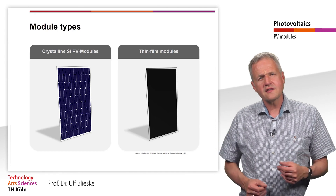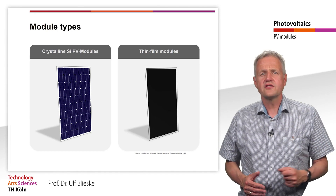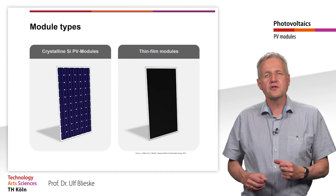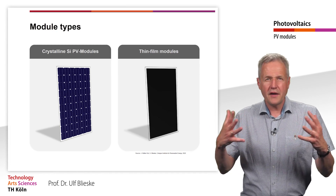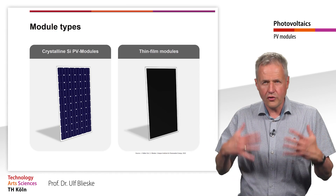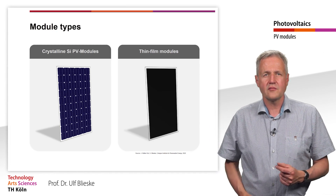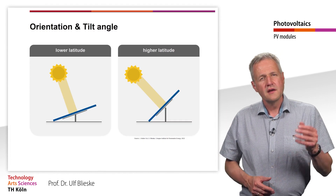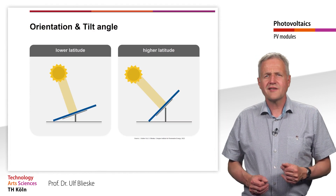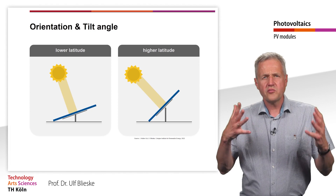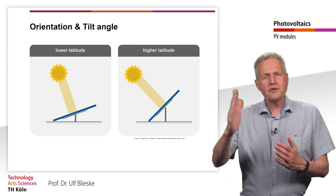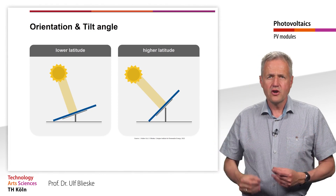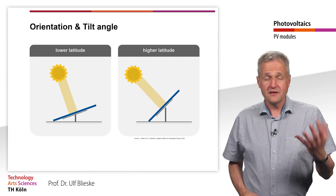In most cases, however, the choice for a module is made between poly and monocrystalline silicon modules, whereby the trend here is towards monocrystalline silicon modules due to the higher efficiency. In addition to the selection of a specific module, the module orientation and tilt angle must be determined during system design.